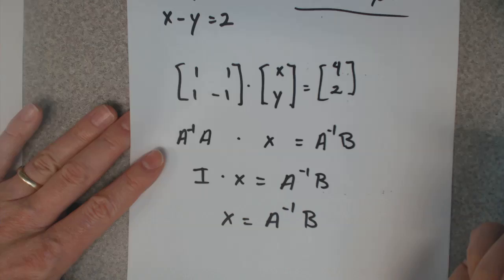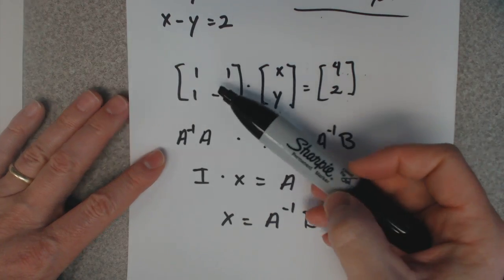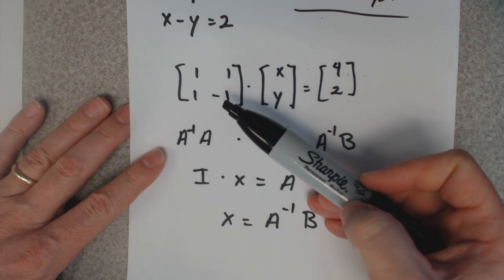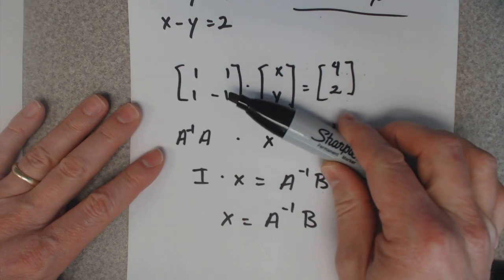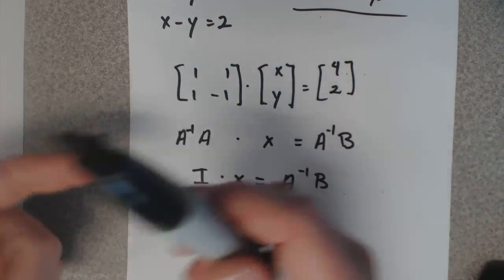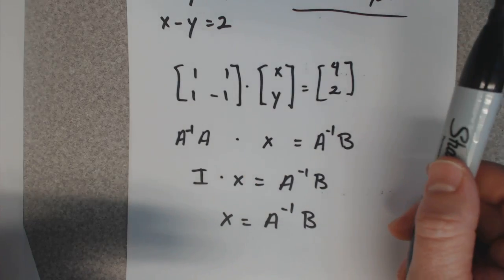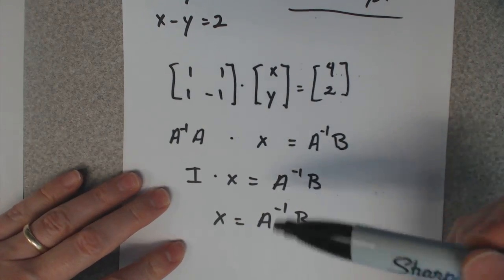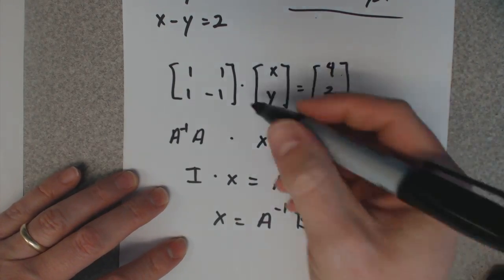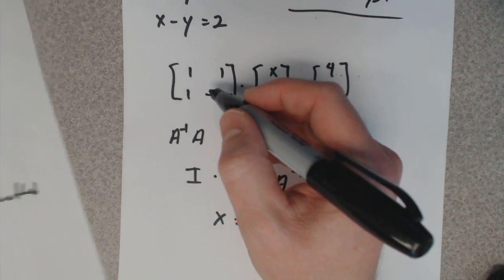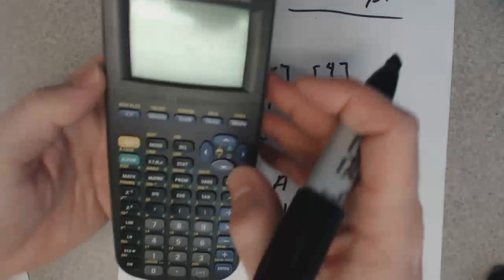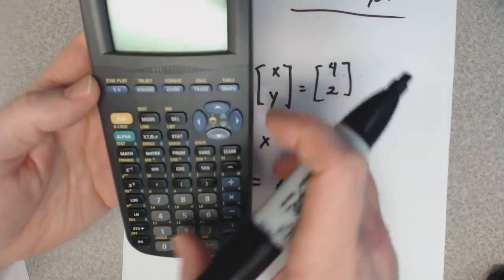Here's the catch: not all matrices have an inverse. If you wind up and this does not have an inverse, then it's either no solution or infinitely many solutions. But let's go ahead and do this first here, and you can do this in the calculator.